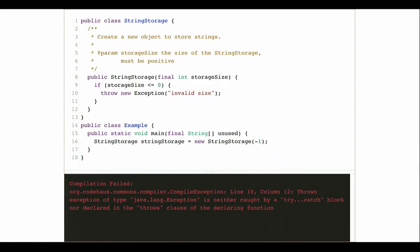Should I be throwing a checked exception or an unchecked exception? Is this error due to some feature of the universe that's outside of my control, or is this error due to programmer error? I've got documentation — it says storage size must be positive. I wrote my Javadoc, published it online. What am I dealing with here? Should I treat this as programmer error or as some external error? How do I handle this?